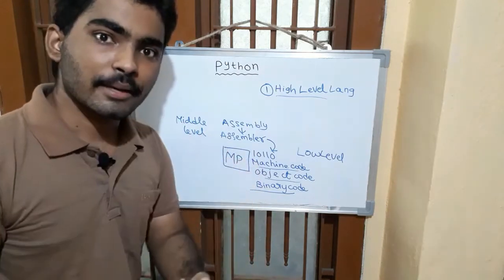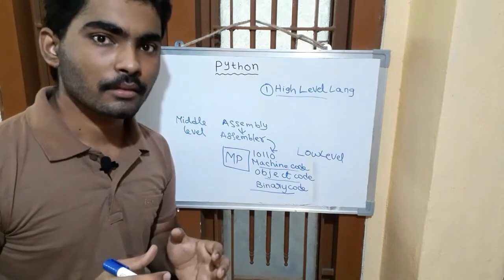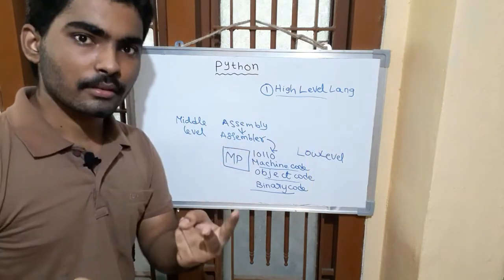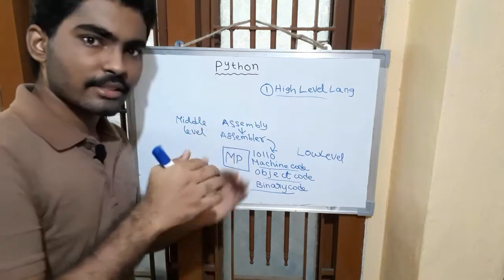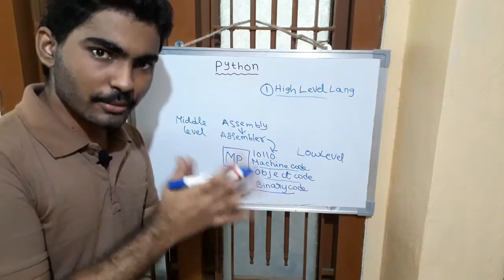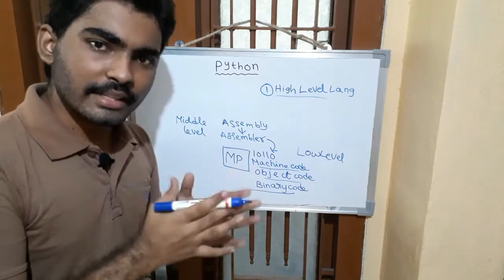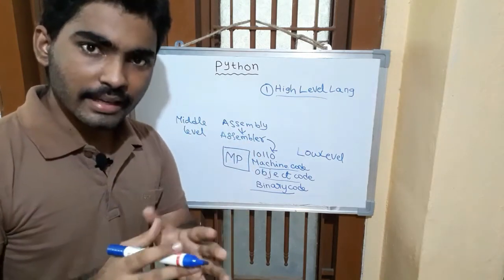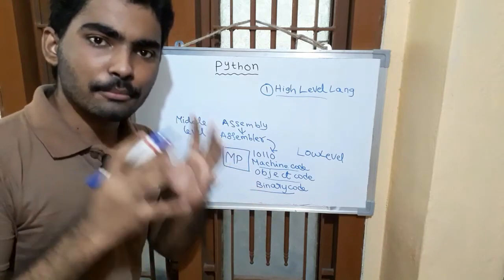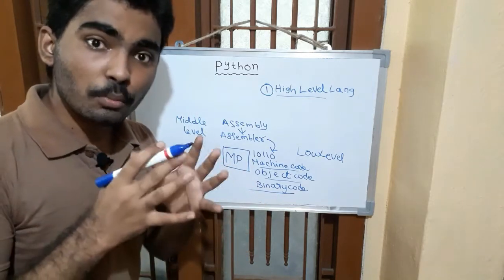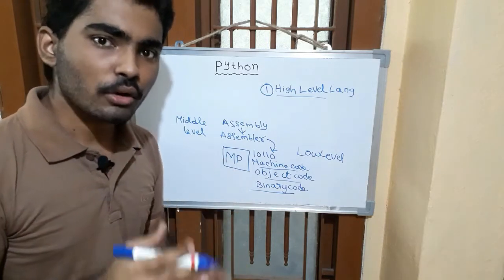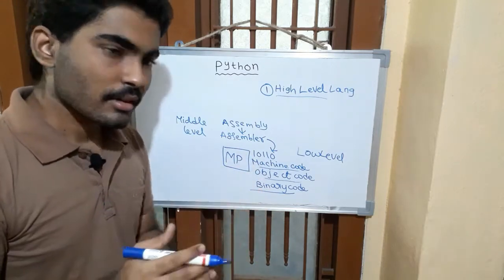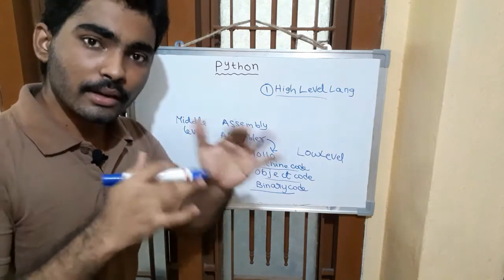First is the self-assembler, or resident assembler. Next is the one-pass assembler — it has two tasks that complete in parallel. Then there is the two-pass assembler: it reads the code two times. The first time it handles memory allocation; the second time it converts assembly language into machine code.